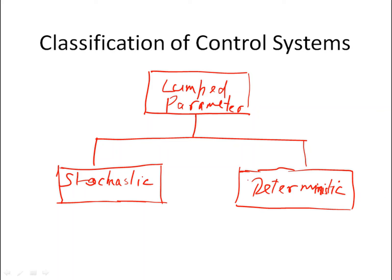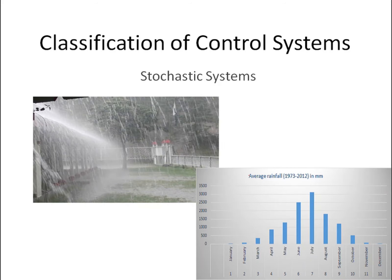A deterministic system is one where we can determine the exact behavior of the system from its input and output values. For example, in a stochastic system like rainfall, rain happens at a certain place during a certain time every year with similar statistics. There is some cause somewhere, but we don't know the exact cause — such systems are probabilistic and different control mathematics is used for them.